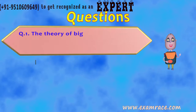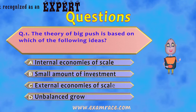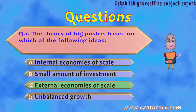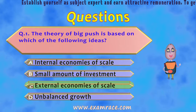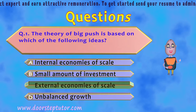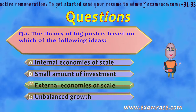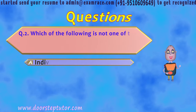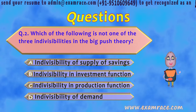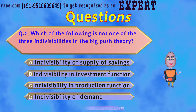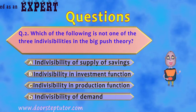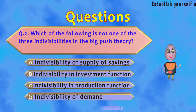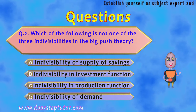Question 1: The Theory of Big Push is based on which of the following ideas? The correct option is external economies of scale, because the idea behind the Big Push Theory is that there must be external economies of scale arising from the expansion of firms and industries. Question 2: Which of the following is not one of the three indivisibilities in the Big Push Theory? The correct option is B — indivisibility in investment function — as the three indivisibilities are: production function, demand, and supply of savings.